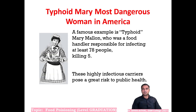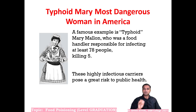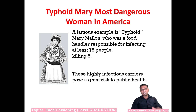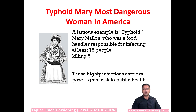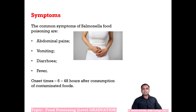In the history of salmonellosis, there was a woman in America named Mary, known as 'Typhoid Mary — the most dangerous woman in America.' She was a maid who handled and served food, and was responsible for infecting 78 people and killing five. Such people with infection due to unhygienic practices who serve food pose a great risk to society.